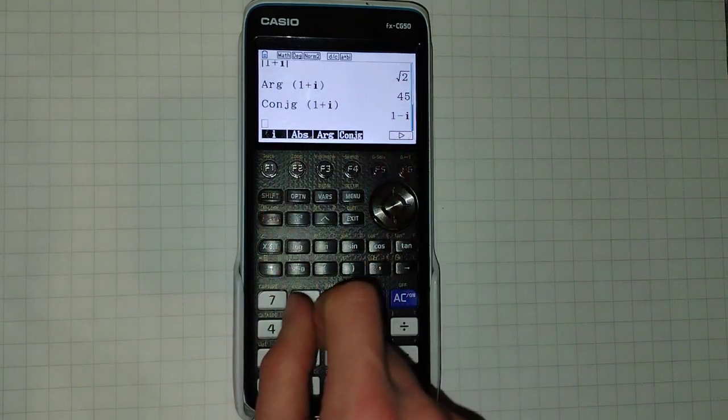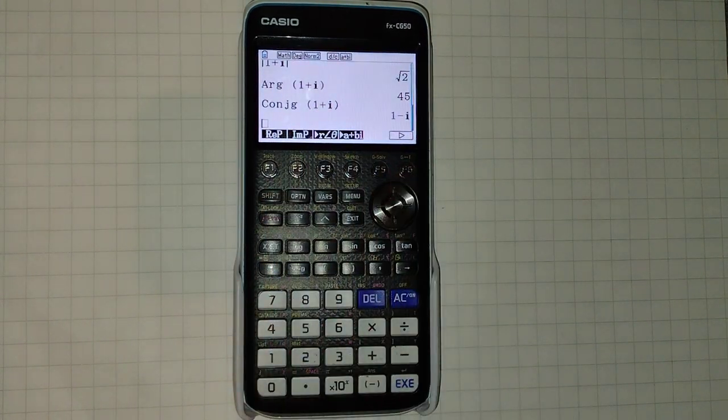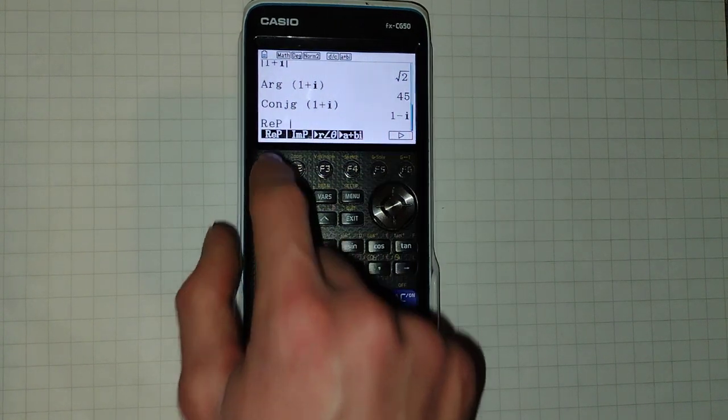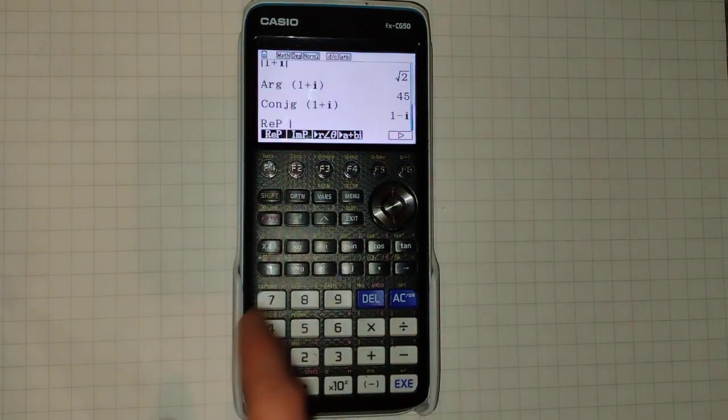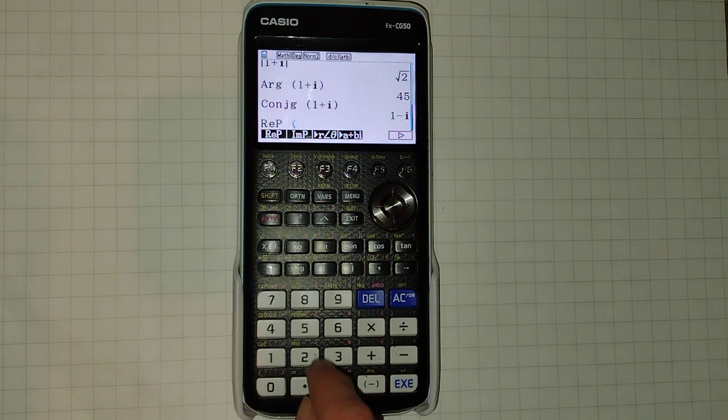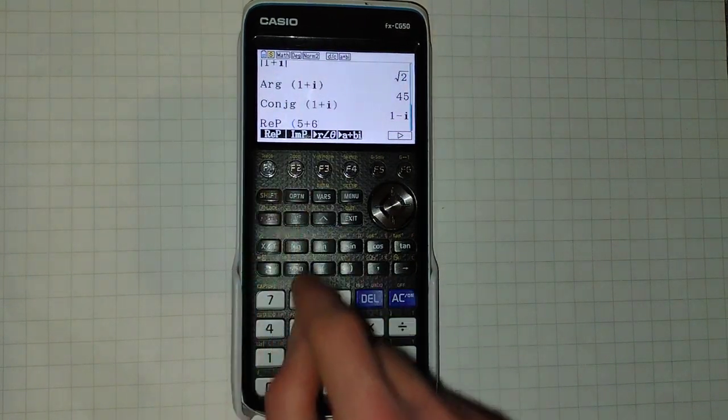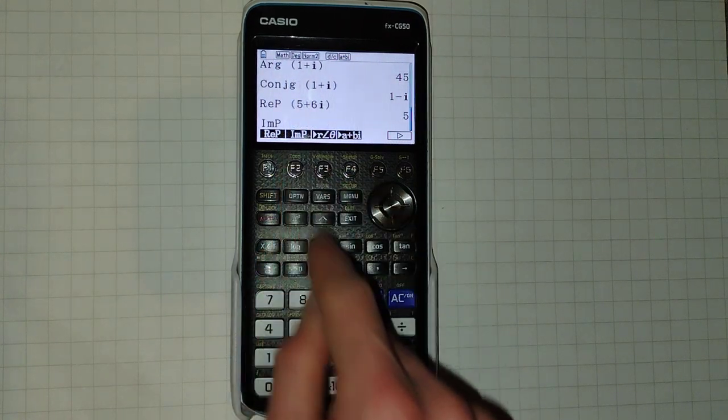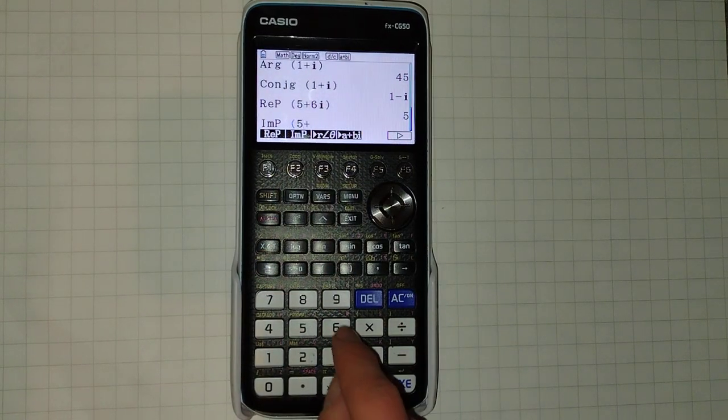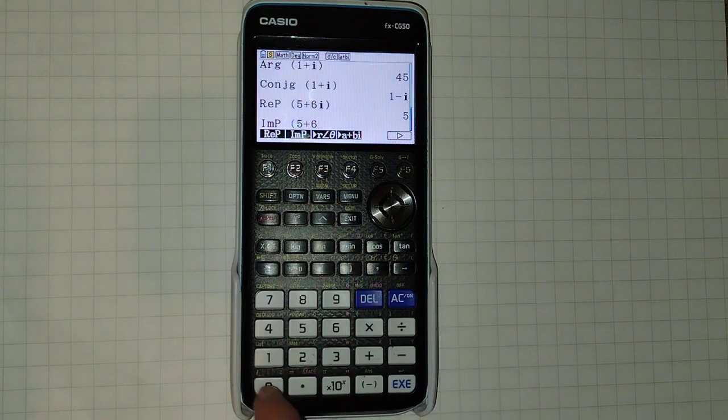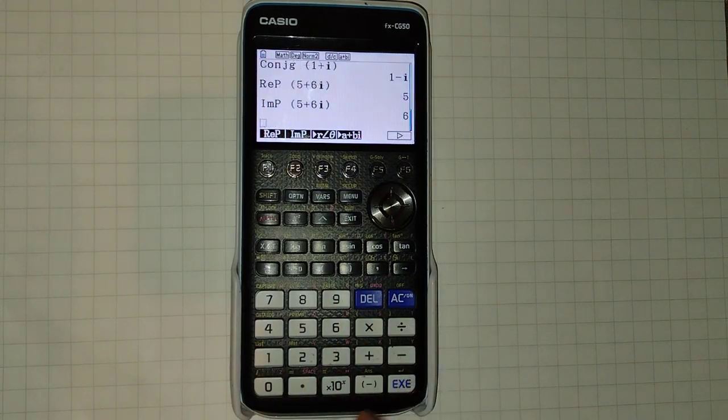So it changes the plus to a minus. And if we click F6, we get some more. Rep, or R-E-P, will give us the real part of our complex number. So 5 plus 6i, it'll give us 5. And imaginary part does the same but it just gives us the imaginary part, 6.